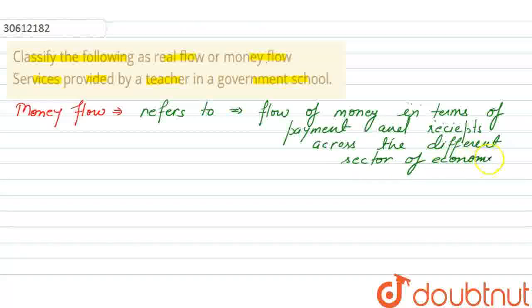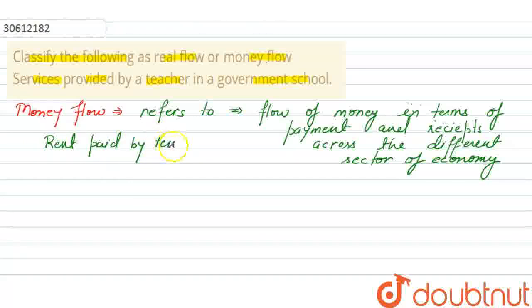For example, you can say: rent paid by tenant to landlord. The landlord provided the service of the room — so that you can stay there — and for that, you paid the rent to the landlord. So the money flowed from you to the landlord. That is called money flow.